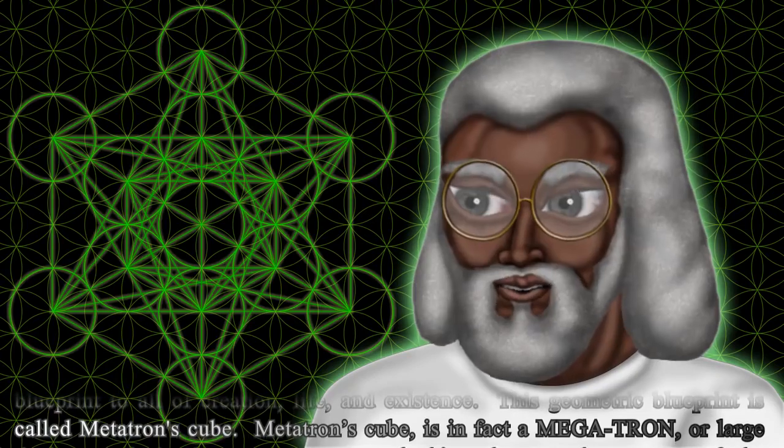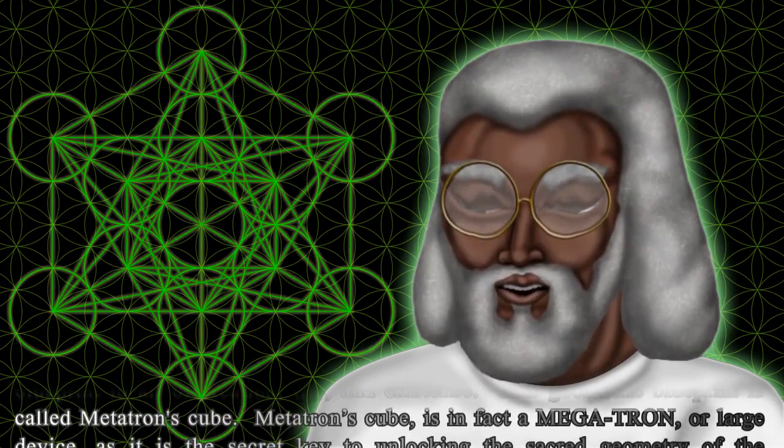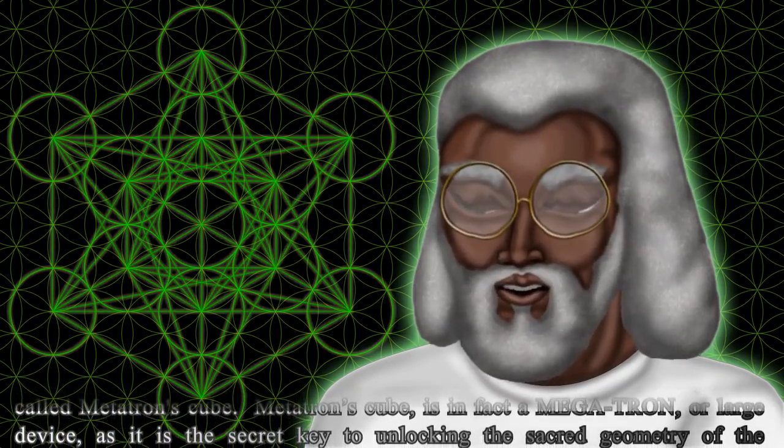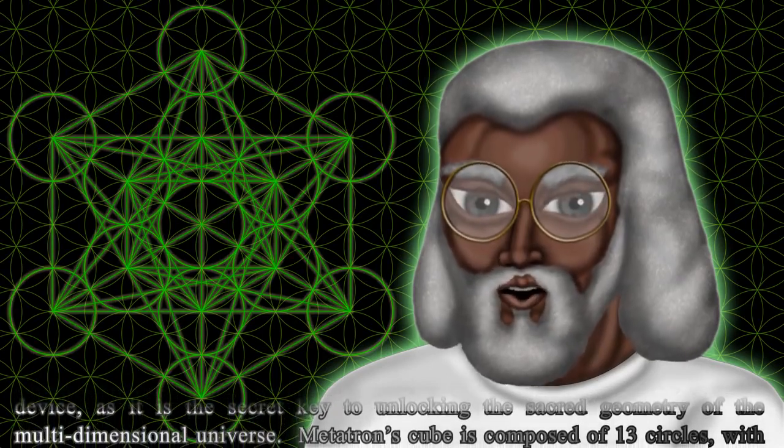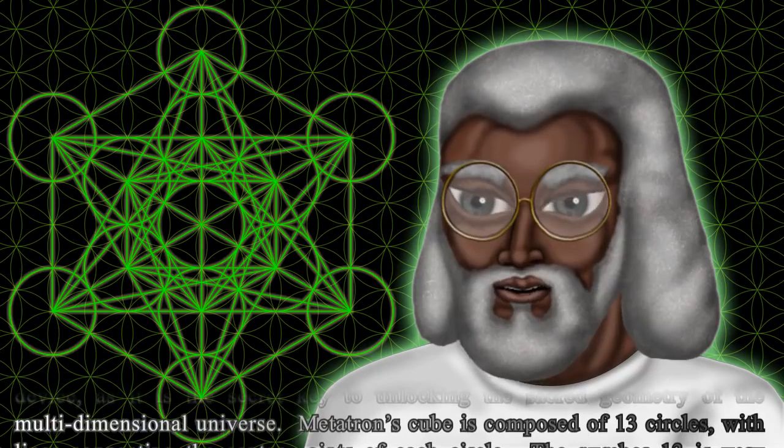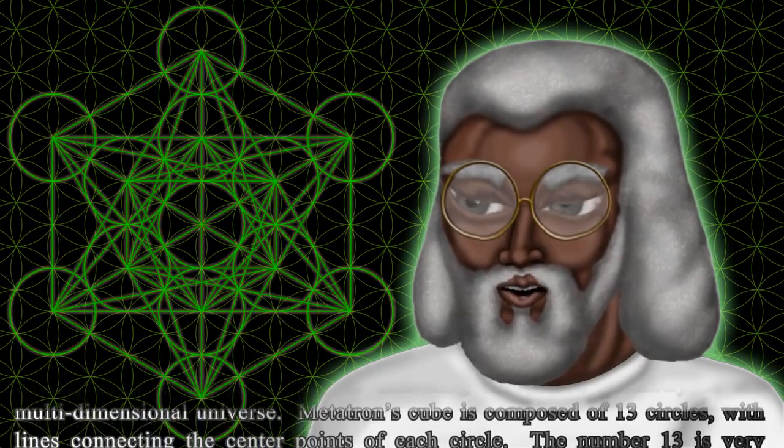Metatron's Cube is in fact a megatron, or large device, as it is the secret key to unlocking the sacred geometry of the multidimensional universe. Metatron's Cube is composed of 13 circles with lines connecting the center points of each circle.